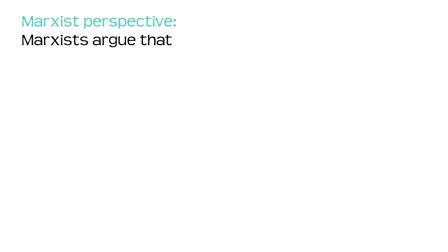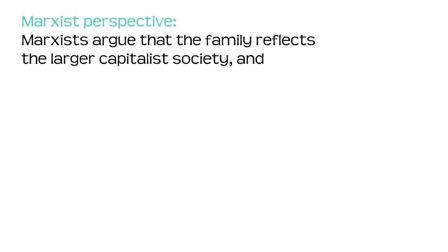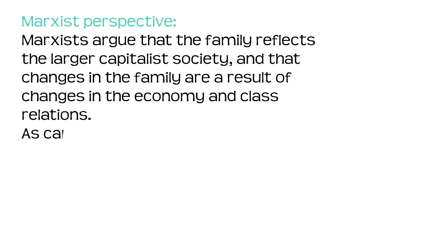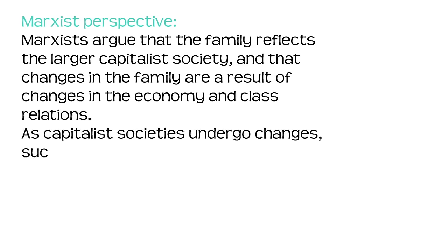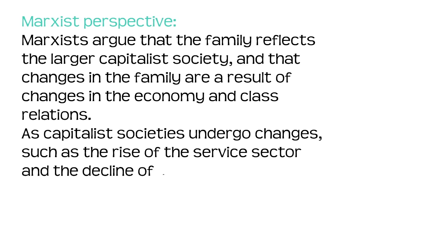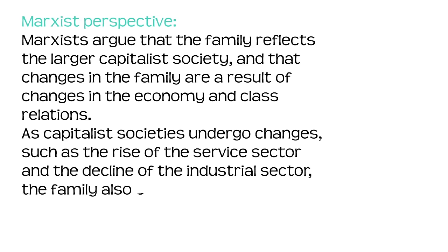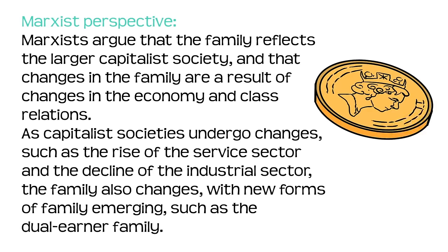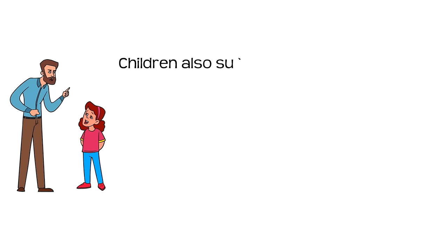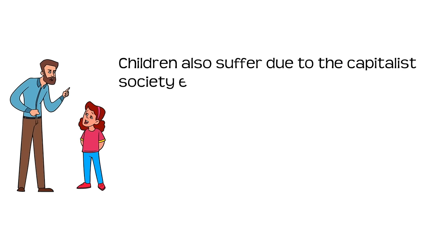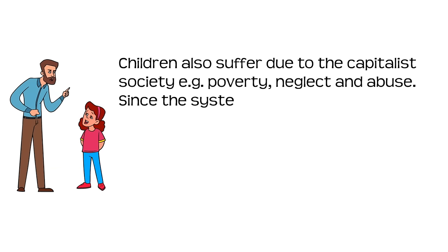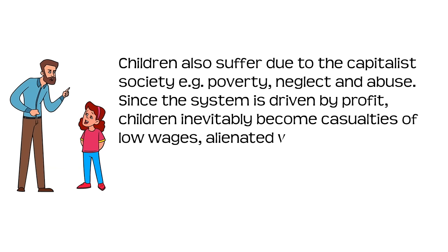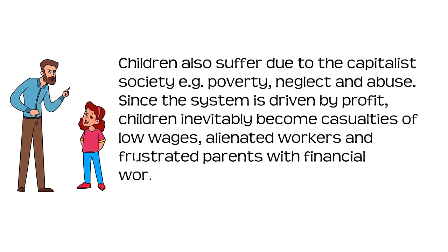The Marxist perspective: Marxists argue that the family reflects the larger capitalist society and that changes in the family are a result of changes in the economy and class relations. As capitalist societies undergo changes, such as the rise of the service sector and the decline of the industrial sector, the family also changes, with new forms of family emerging such as the dual-earner family. Children also suffer due to the capitalist society — for example, by poverty, neglect and abuse. Since the system is driven by profit, children inevitably become casualties of low wages, alienated workers and frustrated parents with financial worries and debt.